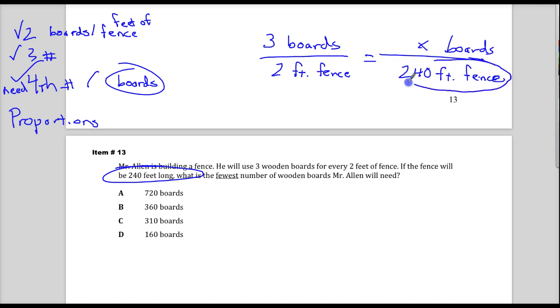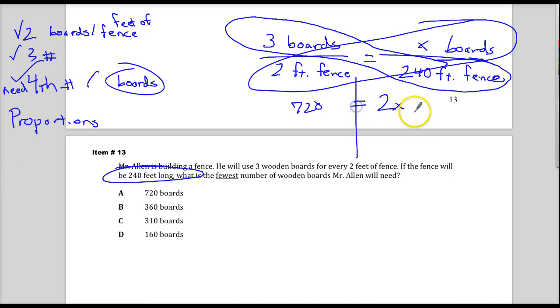So, I'm going to use cross-multiply and divide here, or cross-products. There's other ways to do it. You could know that 2 times 120 gives you 240. So, 3 times 120 will get you the other place that you need. But, that kind of thought process. So, I'm going to deal with 240 times 3, which is 720, and then 2X. It's just a simple solution here. To get rid of times 2, you need to divide. 360 boards.